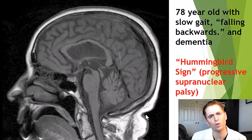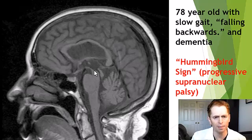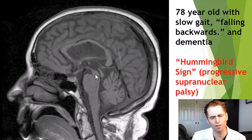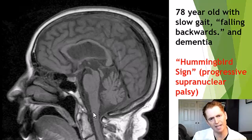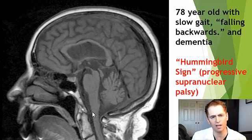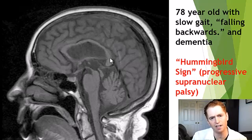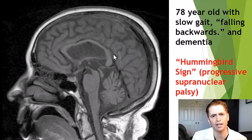This was the 78-year-old with walking difficulty. Here you can see the hummingbird sign — the midbrain is shrunken and atrophic compared to the normal pons, giving the appearance of a hummingbird. You can see the beak and the tail, consistent with PSP, progressive supranuclear palsy, a form of Parkinsonism. On the same film, you can also see some atrophy of the corpus callosum, not necessarily associated with this condition.